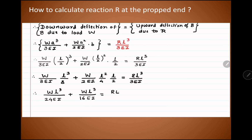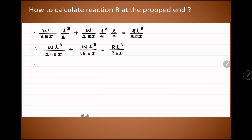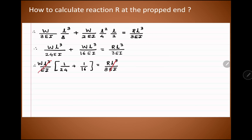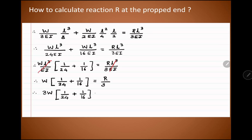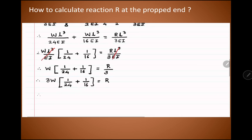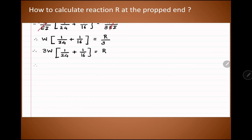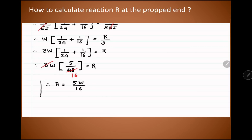This gives WL³/(3EI) = RL³/(3EI) after factoring. Taking WL³/EI common, we get W × (1/24 + 1/16) = R/3. Cancelling L³/EI from both sides, we solve to find R = 5W/16.